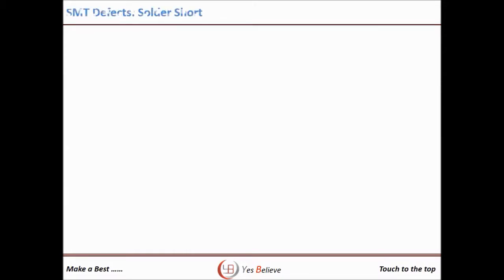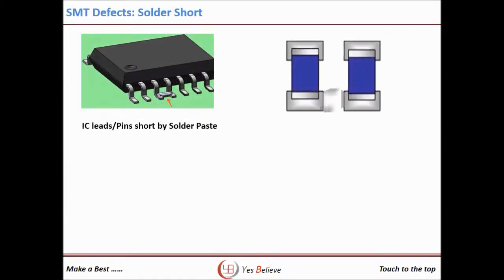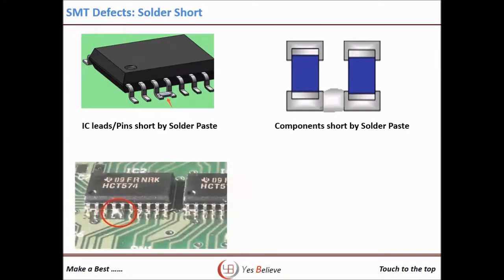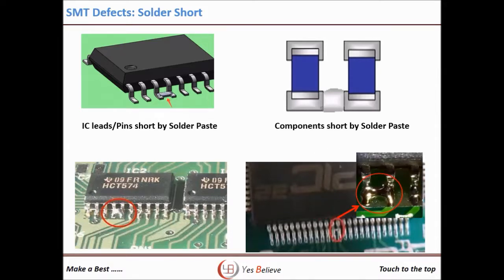Next is solder shot. This defect is related to the mounting or printing process. It can occur if there is a printing shift, excess solder, or a component mounting shift. In the case of fine pitch IC, solder shot may be caused by the PCB design. Since it's difficult for the SMT person to change the PCB design, we can control it by modifying the stencil design. We will share the stencil design guidelines in our upcoming videos.